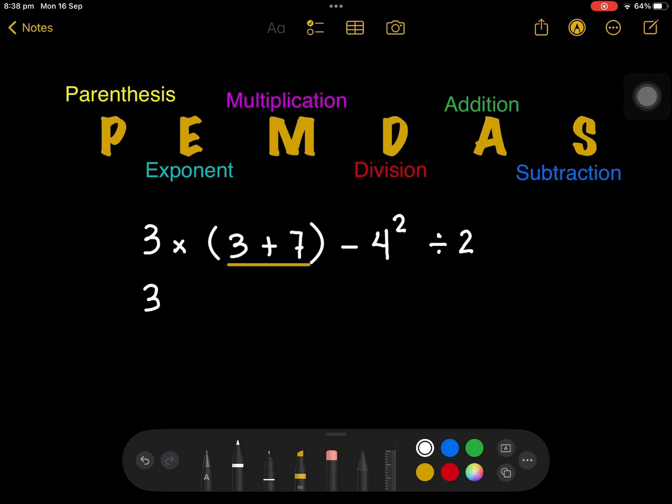So we work first with the bracket. 3 plus 7 is 10. So all you have to do is copy 3 times, 3 plus 7 is 10, minus, and then what is 4 squared? So we have to directly follow the exponent, which is 4 squared, meaning it's 4 times 4, and that is equal to 16.